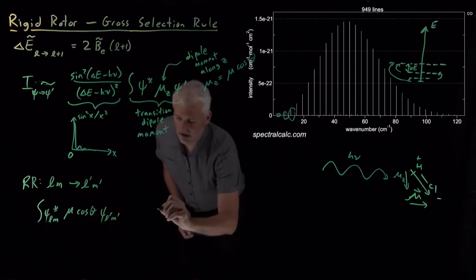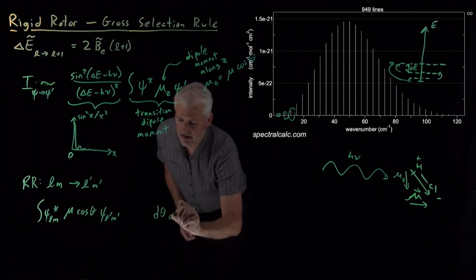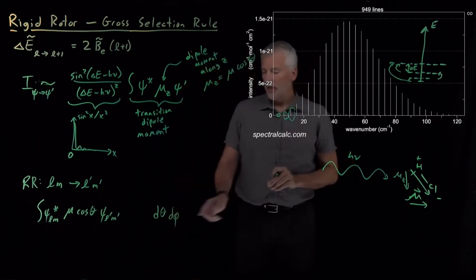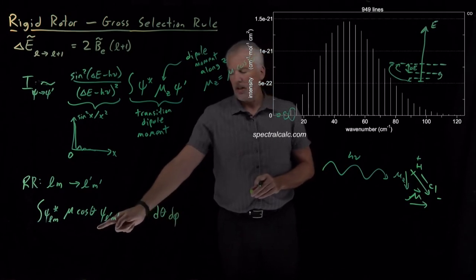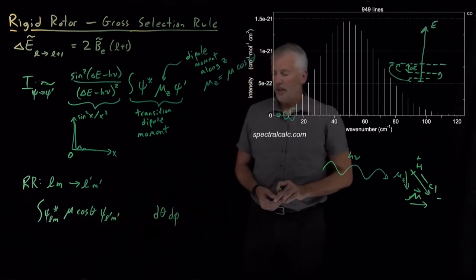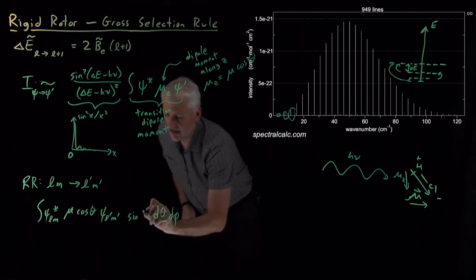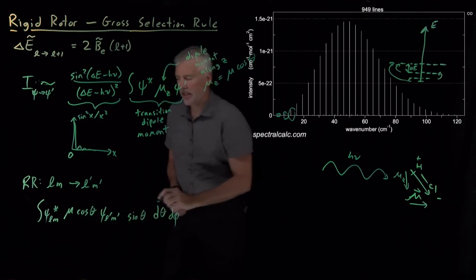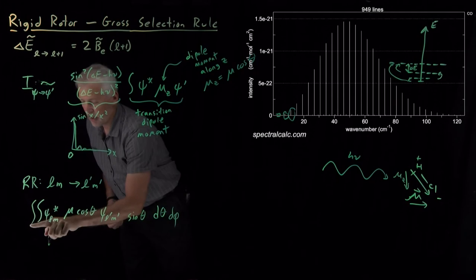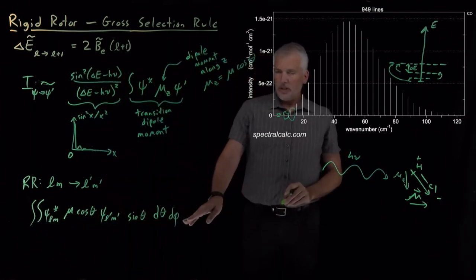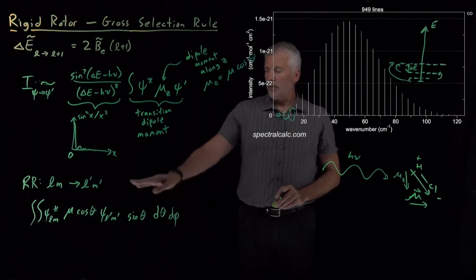We need to integrate that over d theta and d phi, because since we're talking about a rigid rotor or rotating molecule, those are the coordinates in which our wave function is going to be expressed. And don't forget, when we integrate in polar coordinates, we need the sine theta term inside the integral, and then we're going to integrate over both of those variables. So that's what the transition dipole moment looks like for a rigid rotor molecule.